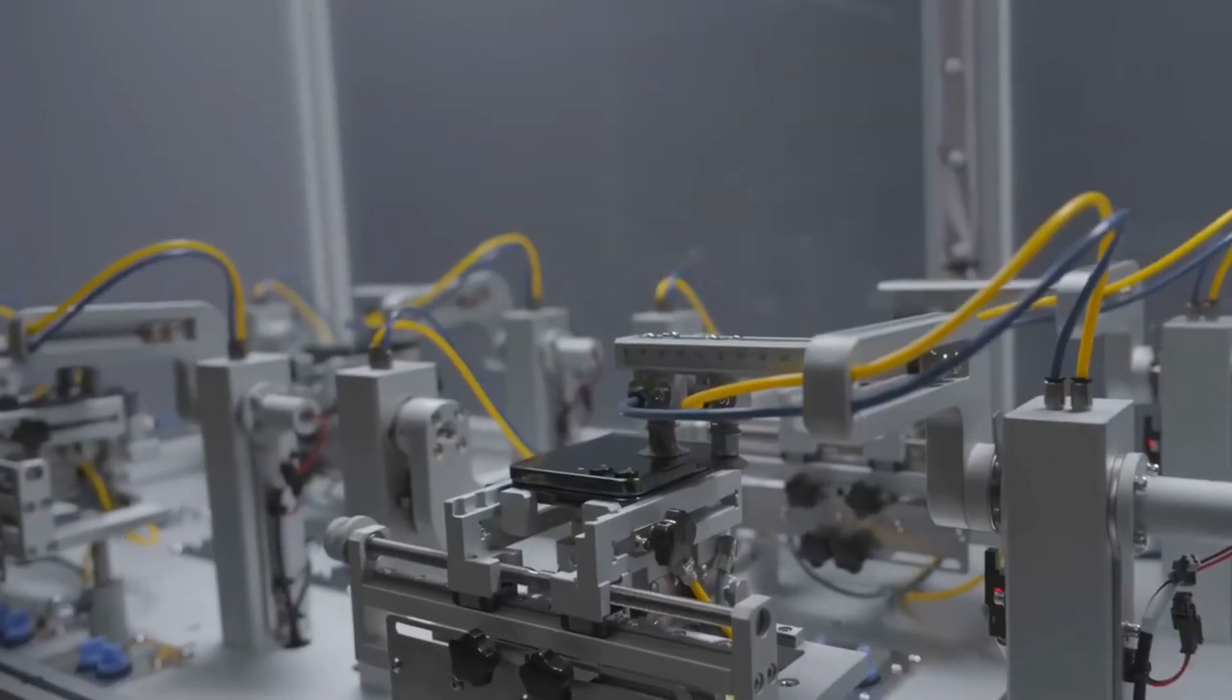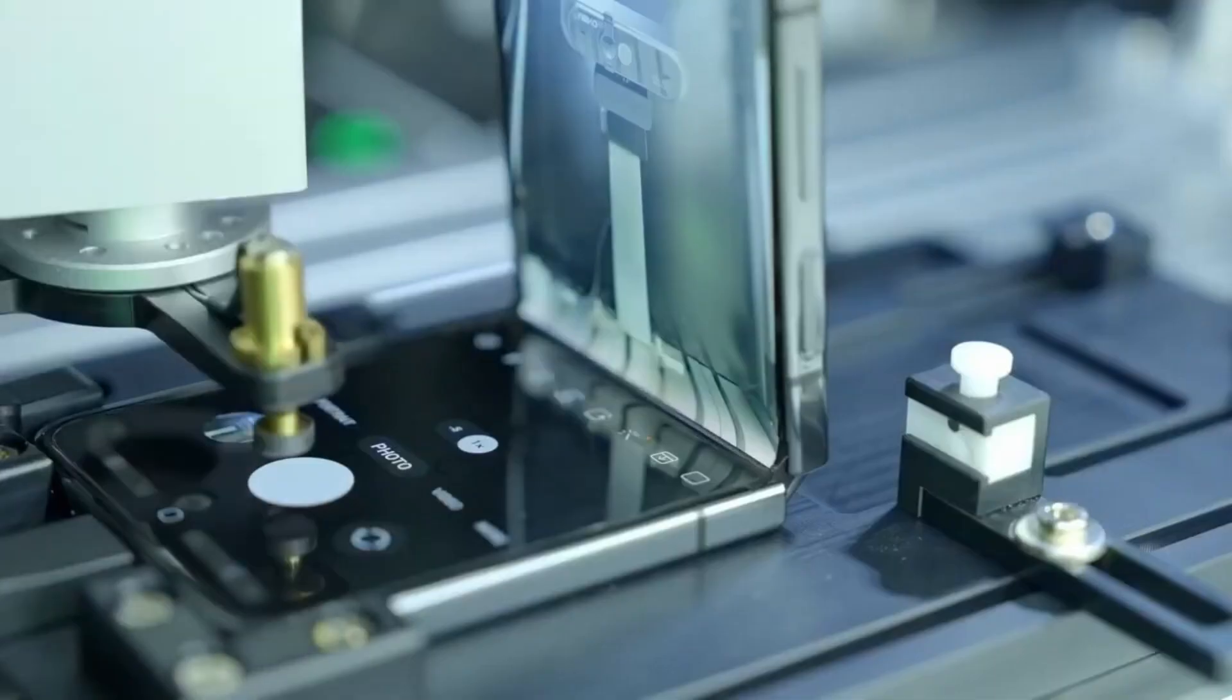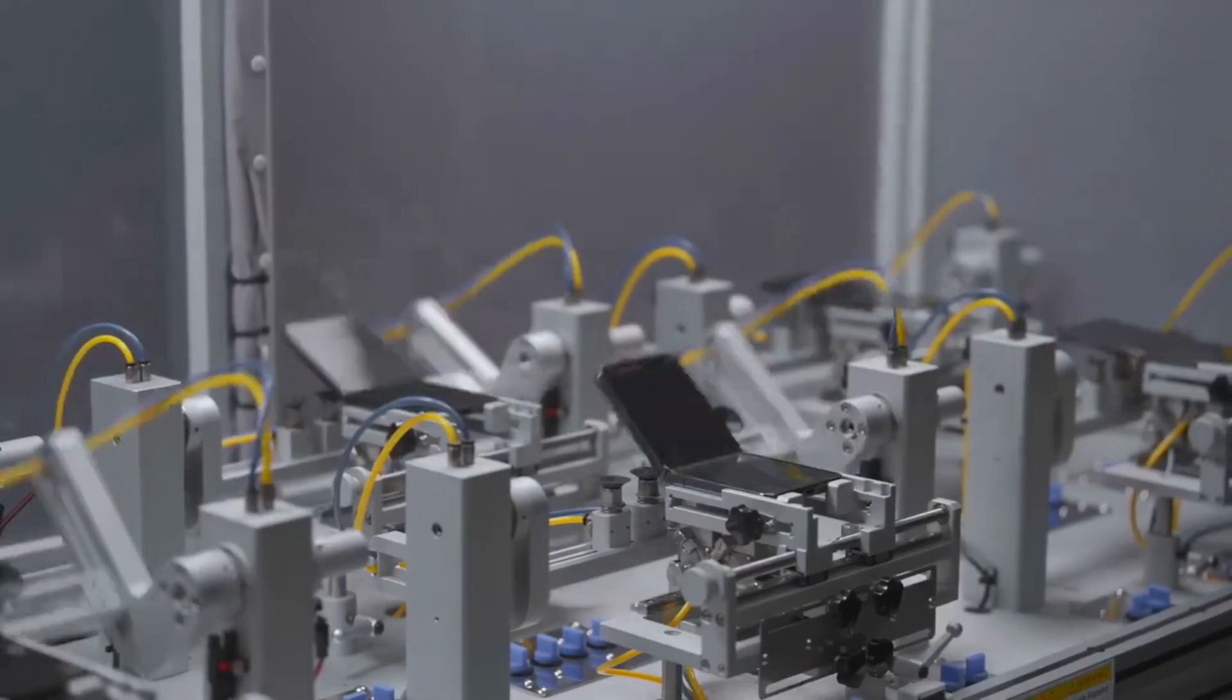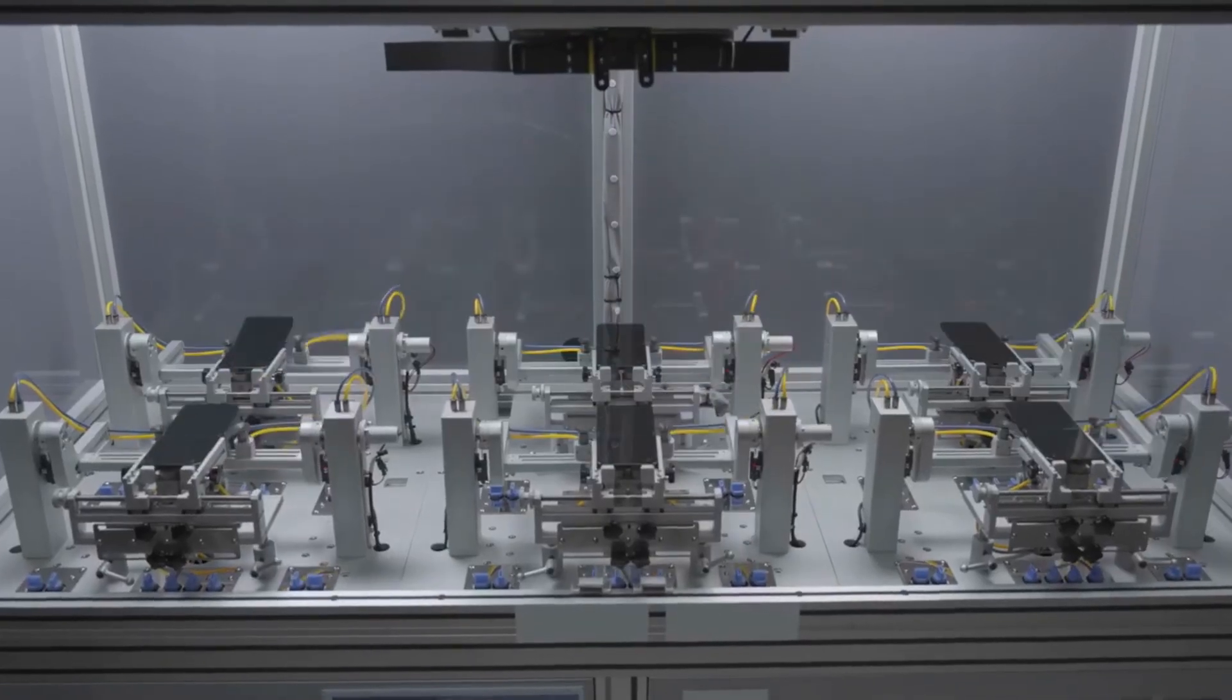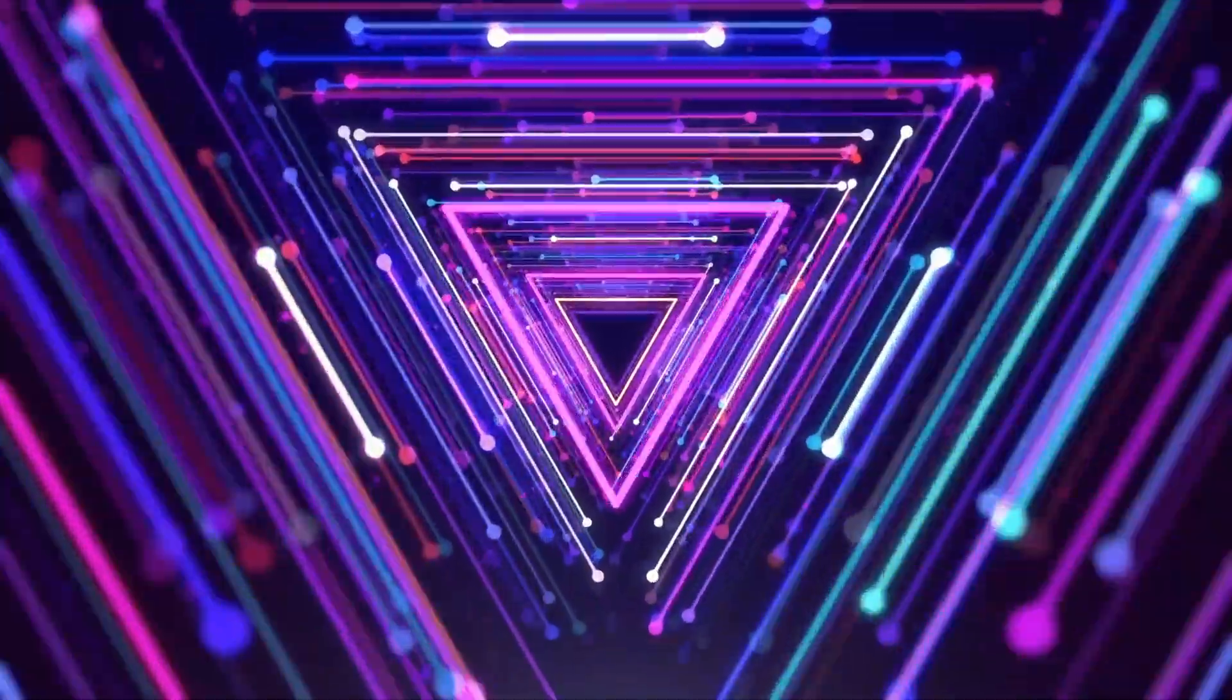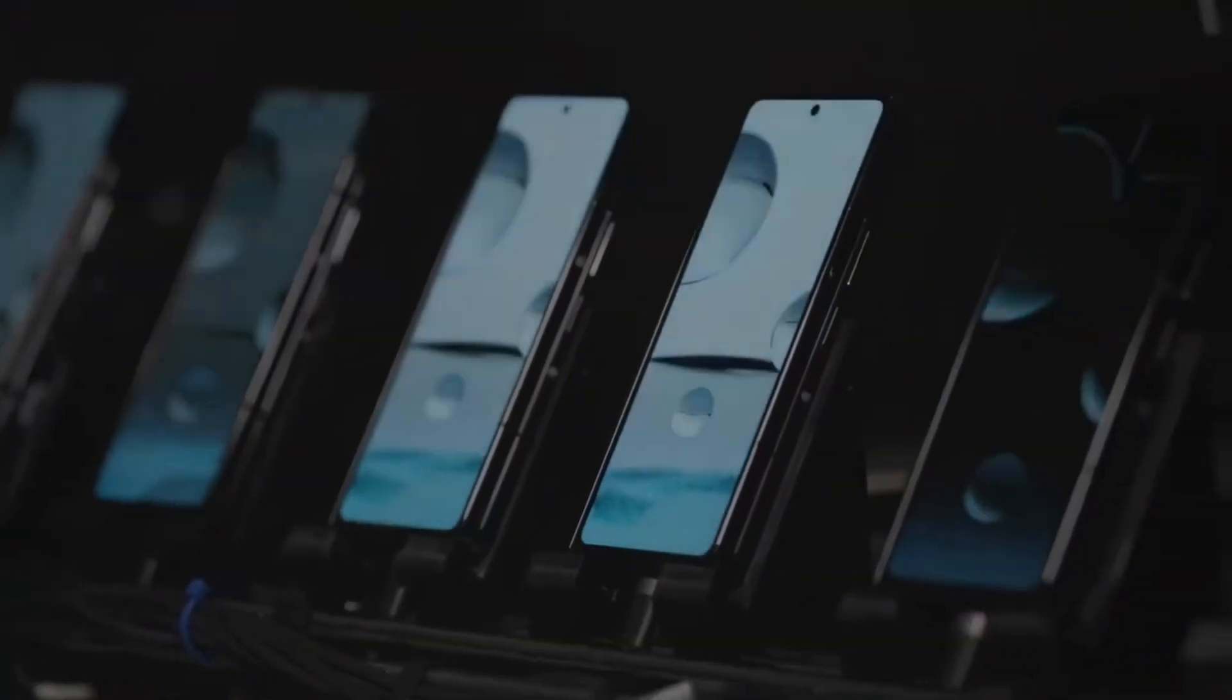Samsung has created what they call Infinity Flex displays using ultra-thin glass that's been chemically treated and layered with organic compounds. When electricity hits these compounds, they emit light, creating those vibrant colors that make Samsung's screens legendary.